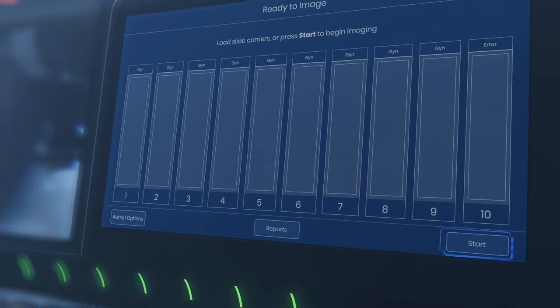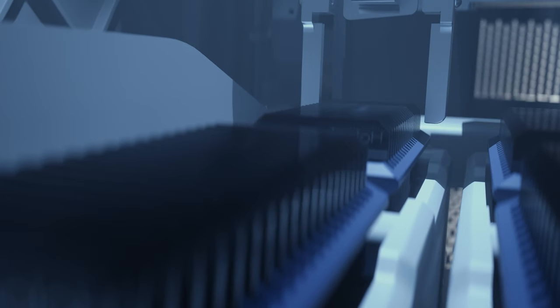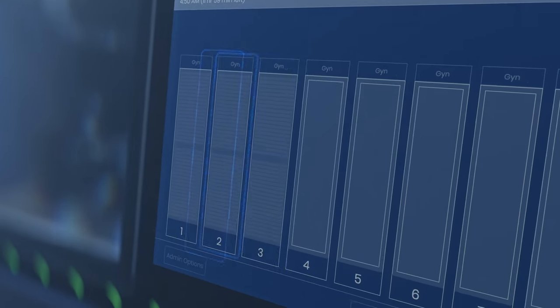On the touch screen interface, press start to initialize the system. As each carrier is being processed, the system takes a slide inventory and displays it on the screen.